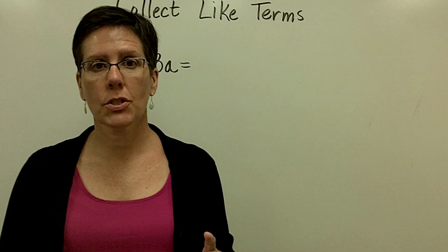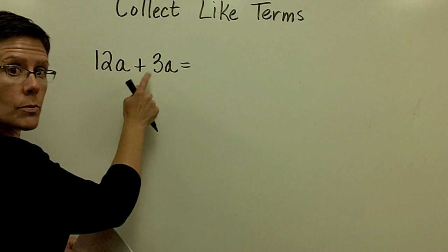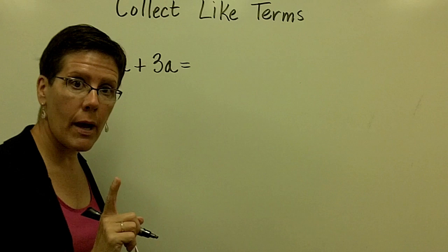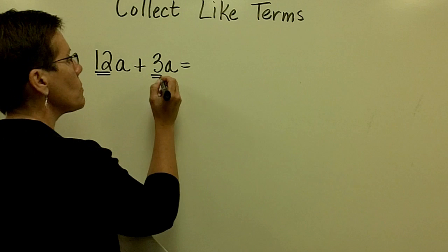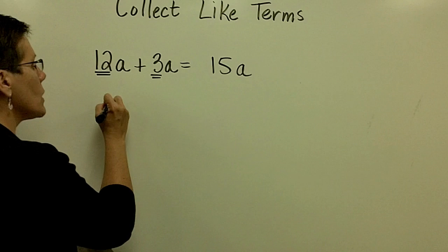I can only collect or combine like terms if the variable portion of that term is alike. So in these two terms, terms are a set of factors, 12 times a, 3 times a, I can collect them because the variable portion is exactly like. If they happen to have powers on them, the power would have to be the same as well. So I can take the 12 and the 3 and add them together and call this expression 15 of those a's or 15a. Remember, the commutative property of addition would also allow us to say that 3a plus 12a is equal to 15a.